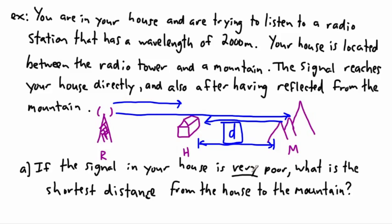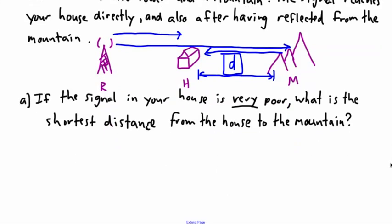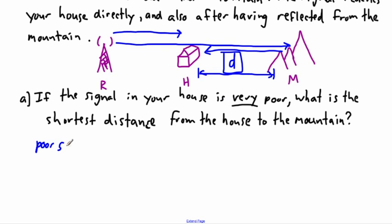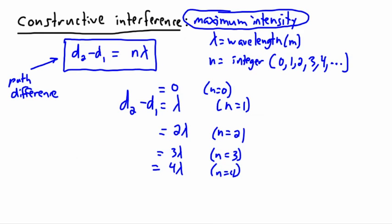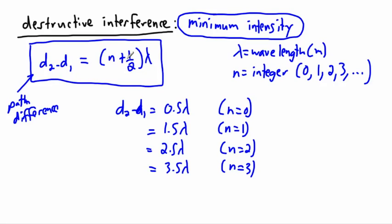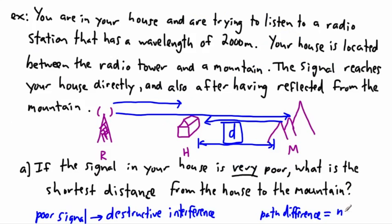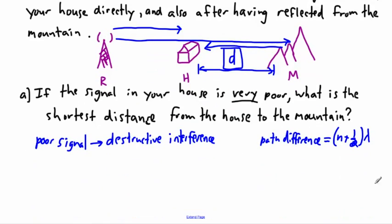If the radio signal in your house is very poor, we should first think about what that implies. A poor signal means destructive interference — they've added up to give a minimum. And if you remember, destructive interference means that the path difference must be equal to n plus a half times lambda.